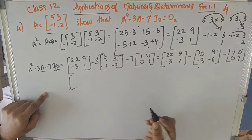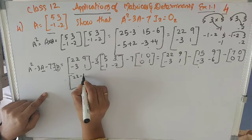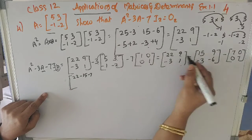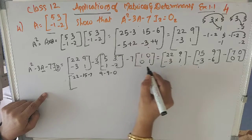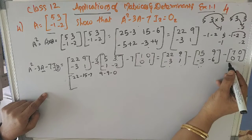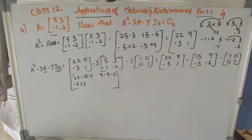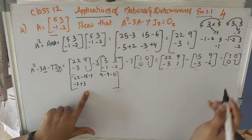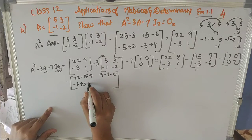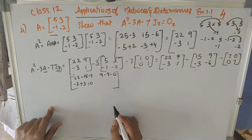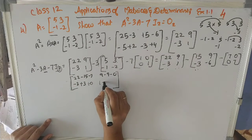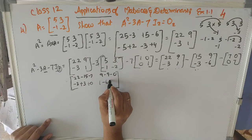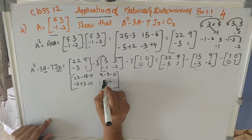Now we simplify further element by element. First element: 22 minus 15 minus 7. Second element: 9 minus 9 minus 0. For row 2: minus 3 minus of minus 3 minus 0, that is minus 3 plus 3 minus 0. Last element: 1 minus of minus 6 minus 7, that is 1 plus 6 minus 7.